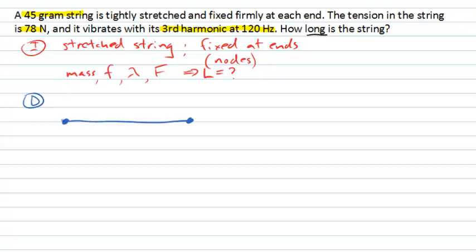We know it's fixed at each end, so I've indicated there with the dots that those are fixed points, unable to vibrate at all. And we're told this string is going to vibrate at a particular frequency at its third harmonic. Now, the third harmonic tells us how many anti-nodes we have between each of the nodes. So the third harmonic tells us there's going to be three.